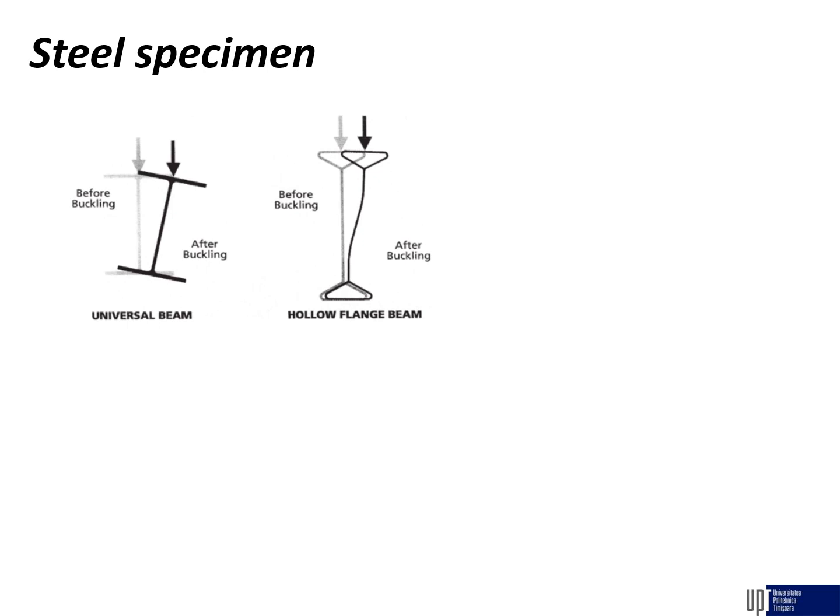have the tendency to lose stability by lateral distorsional buckling, meaning that a part of the cross section is not in the same initial shape as at the beginning of the load.